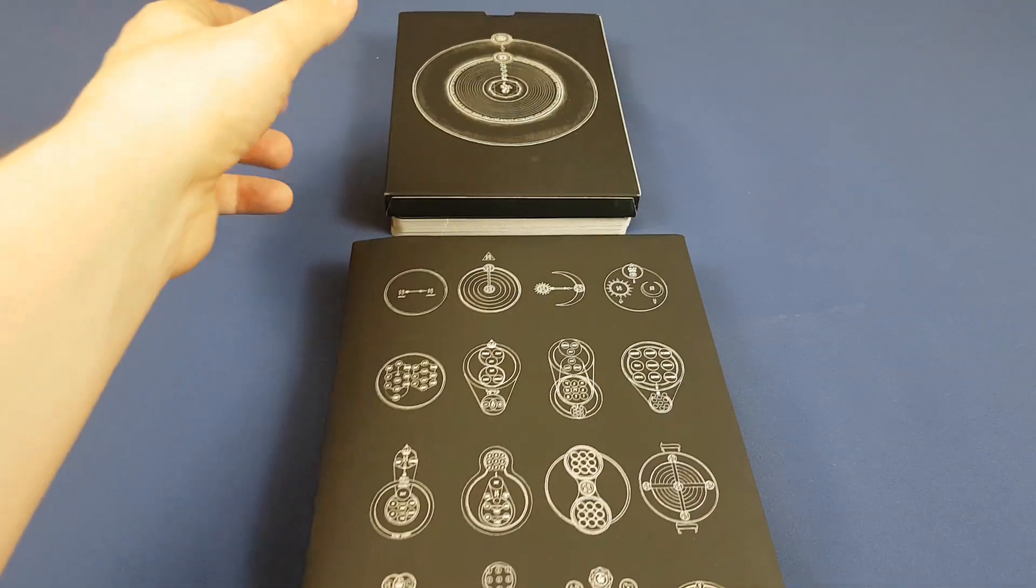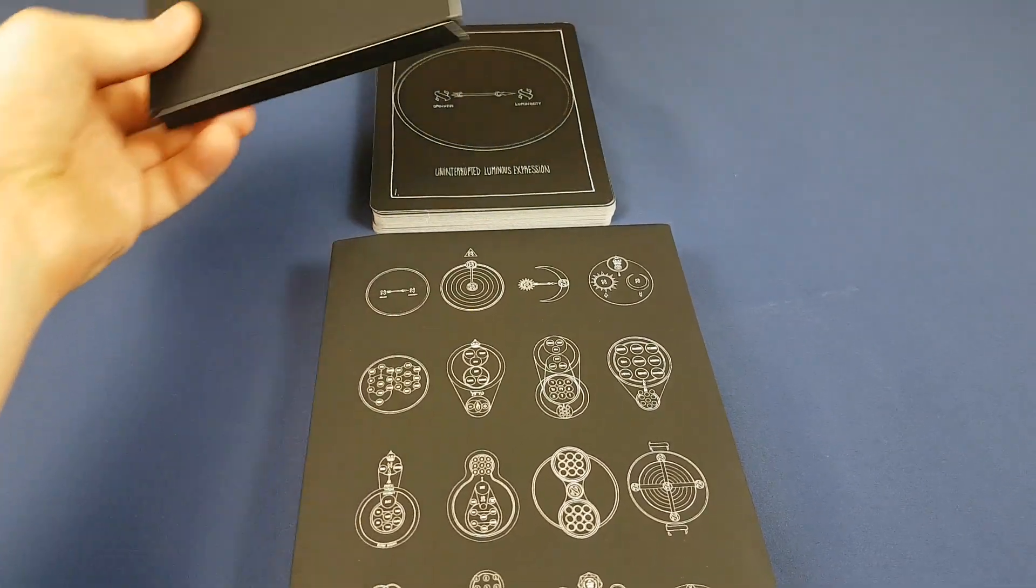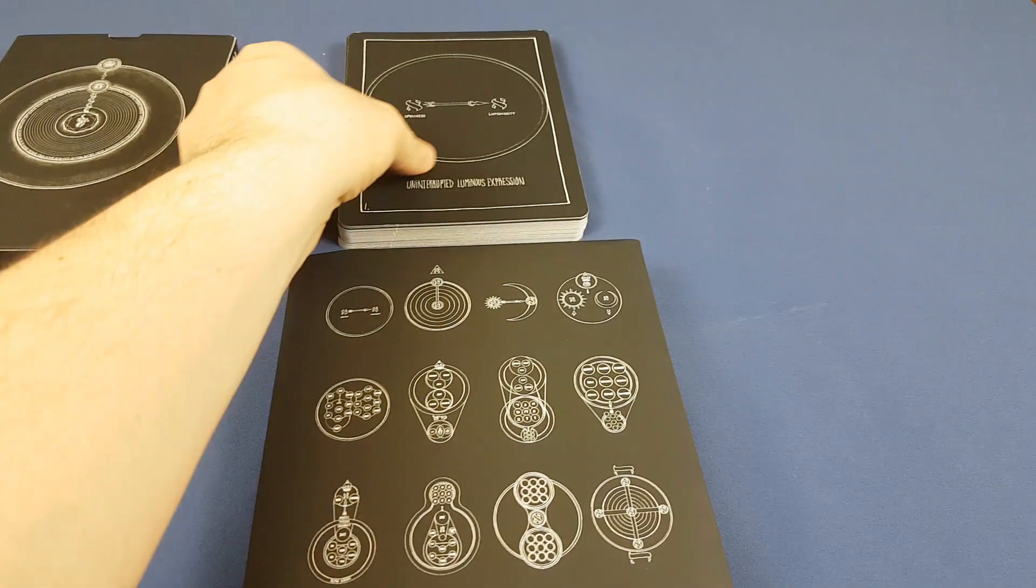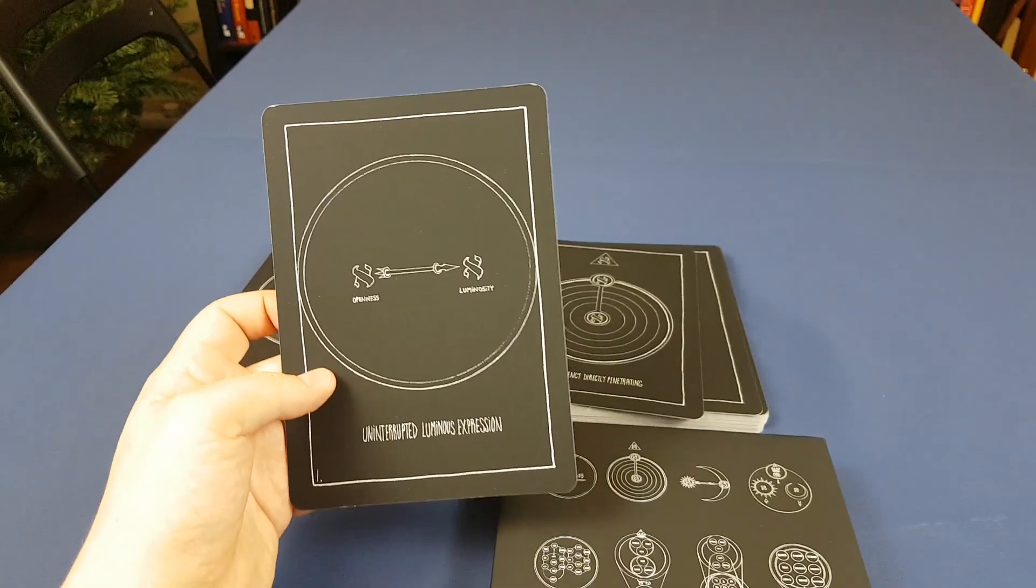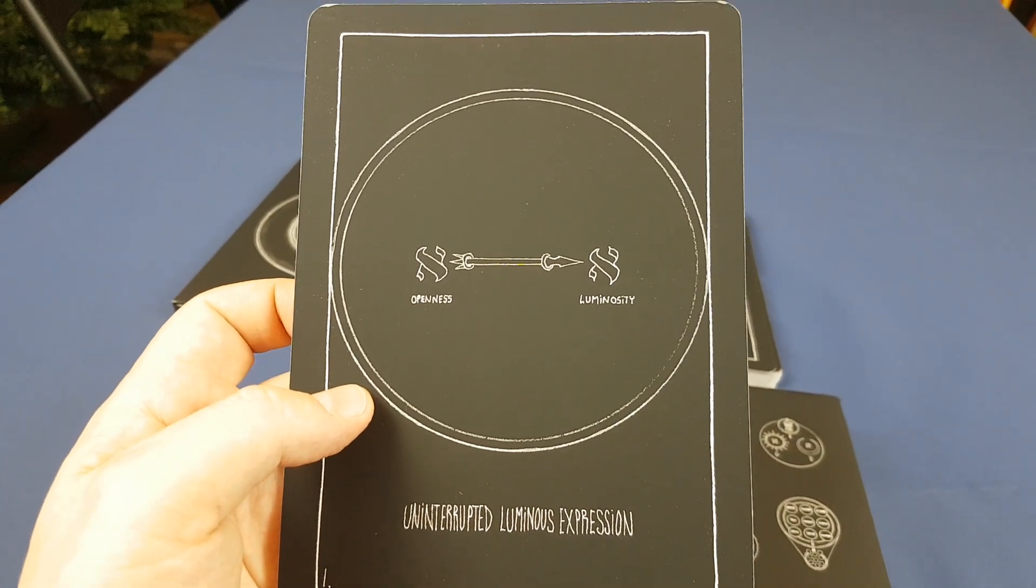It comes in two parts. As you can see, there's this tuck box full of cards, and these are not some kind of oracle or tarot or anything like this. They are cards for contemplation.